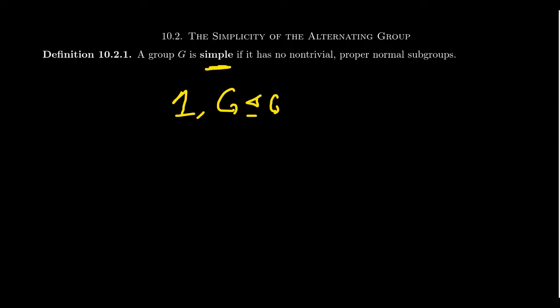Why do we call them simple groups? As you get more into group theory, you start to realize that simple groups are essentially the atomic building blocks of every other group. We can create larger groups by understanding what the simple groups are. Simple groups really are the most fundamental of all types of groups — every group can be built up from them. There has been a great effort to classify all finite simple groups.